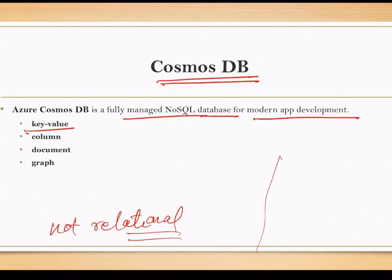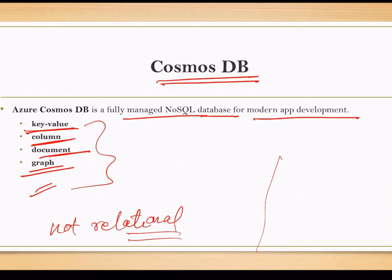The four kinds of NoSQL databases are key-value, column, document, and graph. This is just for your information — normally we don't get exam questions from this. We will get questions like 'we require a fully managed NoSQL database,' and in that case the answer is Azure Cosmos DB.